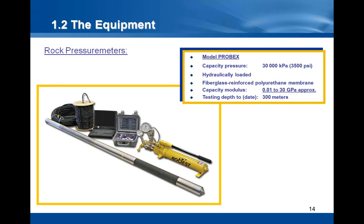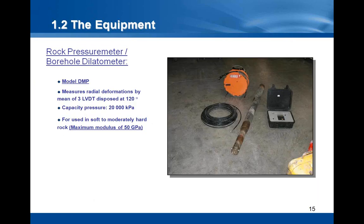The maximum testing depth is 300 meters. Another example of rock pressure meter, also called a borehole dilatometer, is the DMP. The DMP measures directly the radial deformation using 3 LVDTs located in the probe. The maximum capacity is 20,000 kPa, and the maximum modulus is 50 GPa, which allows this dilatometer to be used in moderately hard rock.